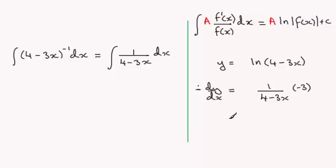So what you're getting here is minus 3 divided by 4 minus 3x. Now this is not the same as 1 over 4 minus 3x because we've got this constant here minus 3.